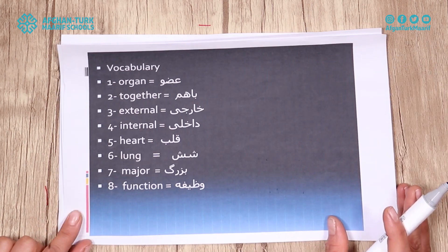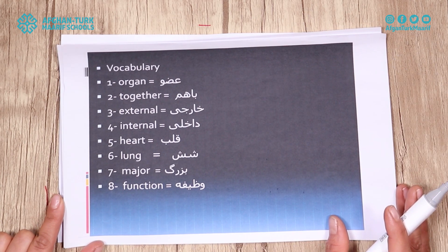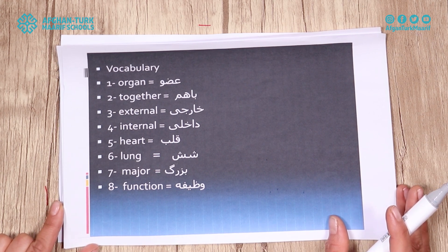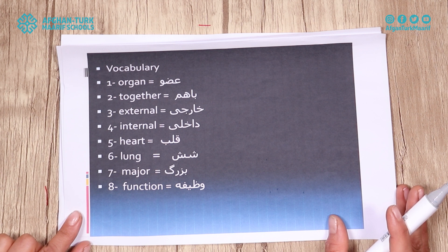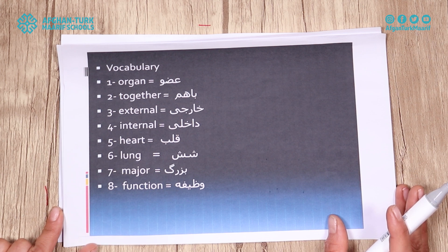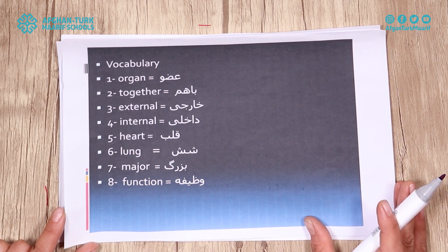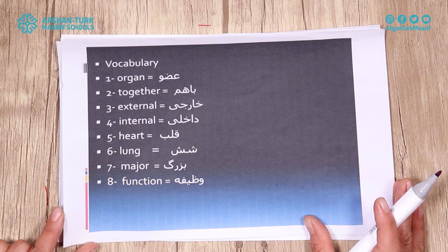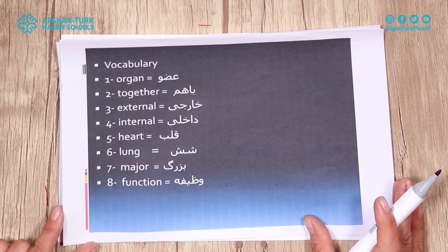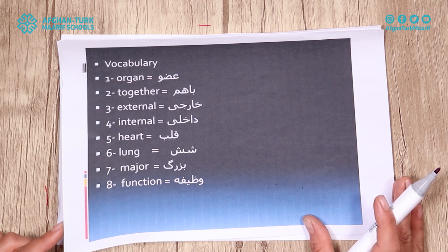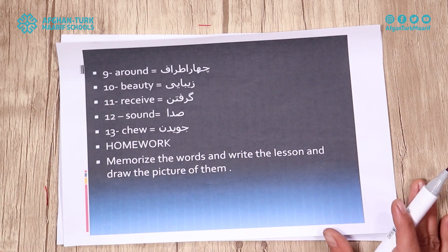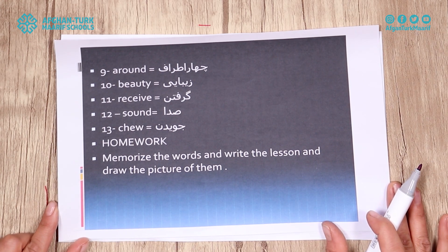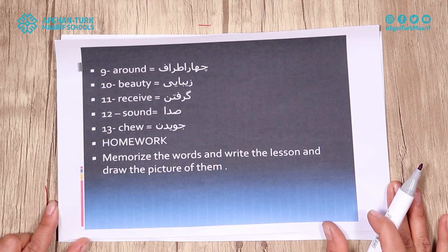Thank you for today. Dear students, I am reading the vocabulary with the meaning — pay attention to the pronunciation. Number one: Organ; Together; External; Internal; Heart; Lung; Major; Function — meaning duty; Around; Beauty; Receive; Sound; Chew.